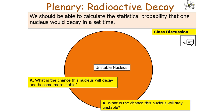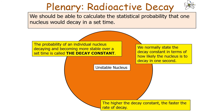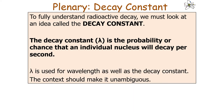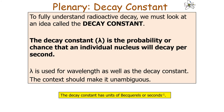We can calculate the statistical probability of one nucleus decaying in a set time — the chance it will decay and become more stable, or remain unstable. This links to the concept of the decay constant: the probability of an individual nucleus decaying and becoming more stable over a set time. The decay constant is given the symbol lambda (λ) and is normally stated as the probability of decay per second. Its units are becquerels or seconds to the minus one. Note that lambda is also used for wavelength, but context makes it unambiguous.